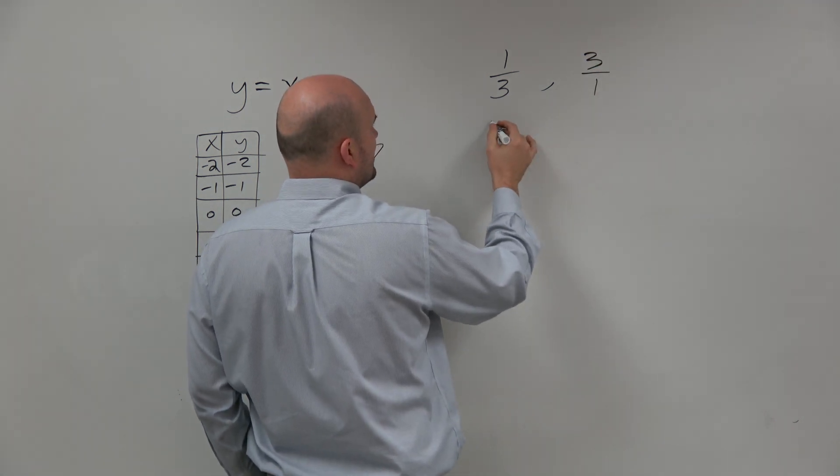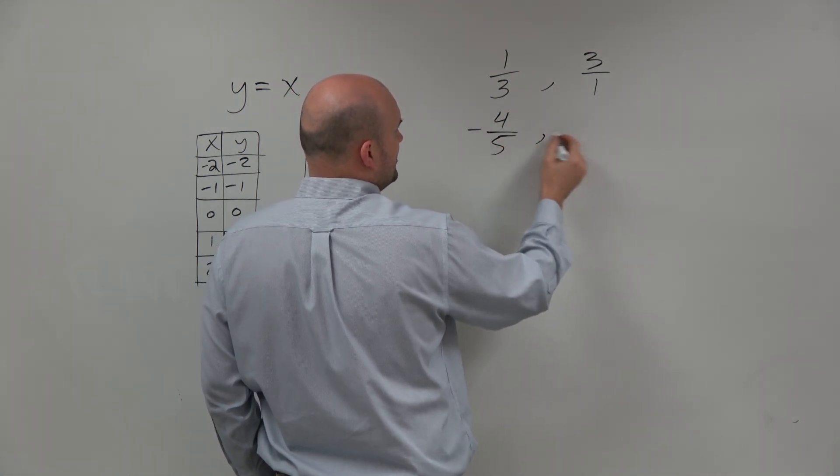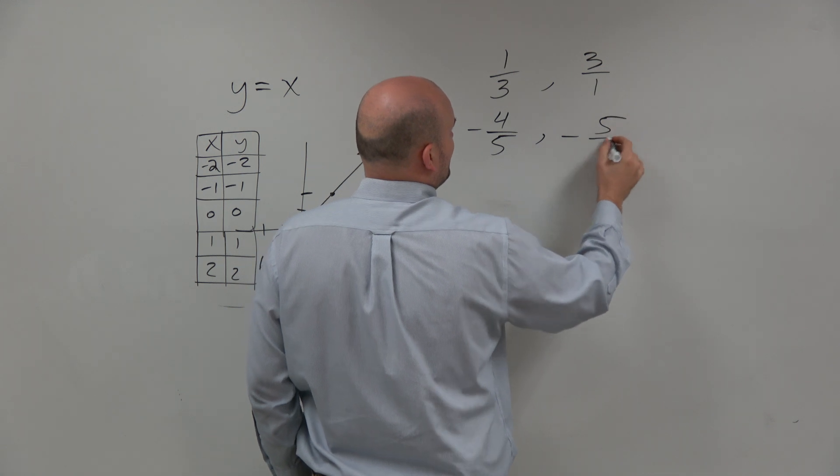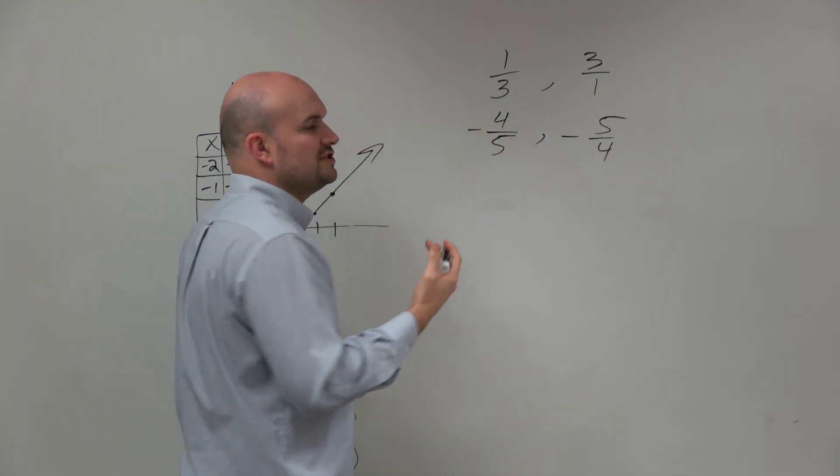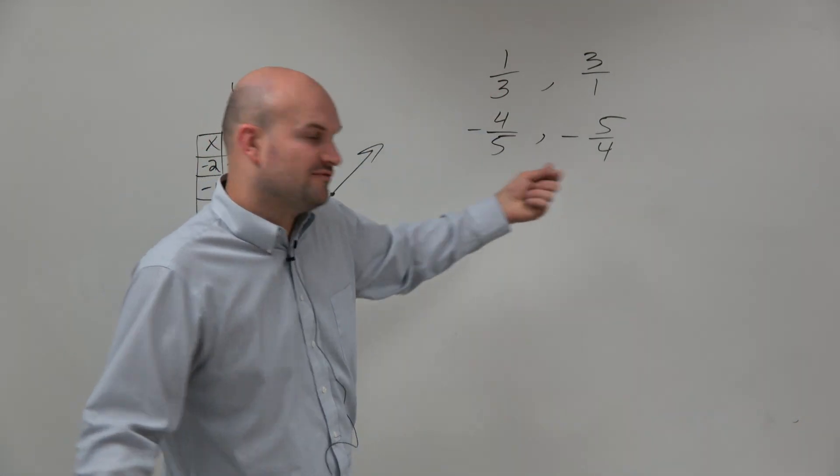If I was looking for negative 4/5, the reciprocal is going to be negative 5/4. The negative doesn't really matter if it's in the numerator or denominator. Basically, the numerator and denominator are just being flipped.